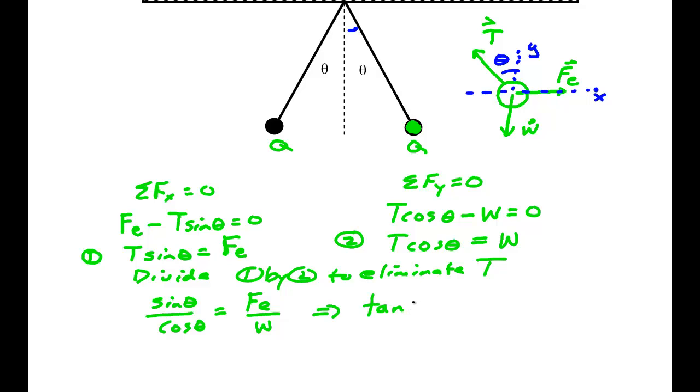Well, that's just the tan of theta, sine over cosine. And on the other side, FE, I get K, the charge Q squared over the distance. Now, let's see what the distance is. The distance is this thing here. I'll call this side A, and that distance of the triangle A. So this distance is 2A. So it's divided by 2A squared. And on the bottom, MG.